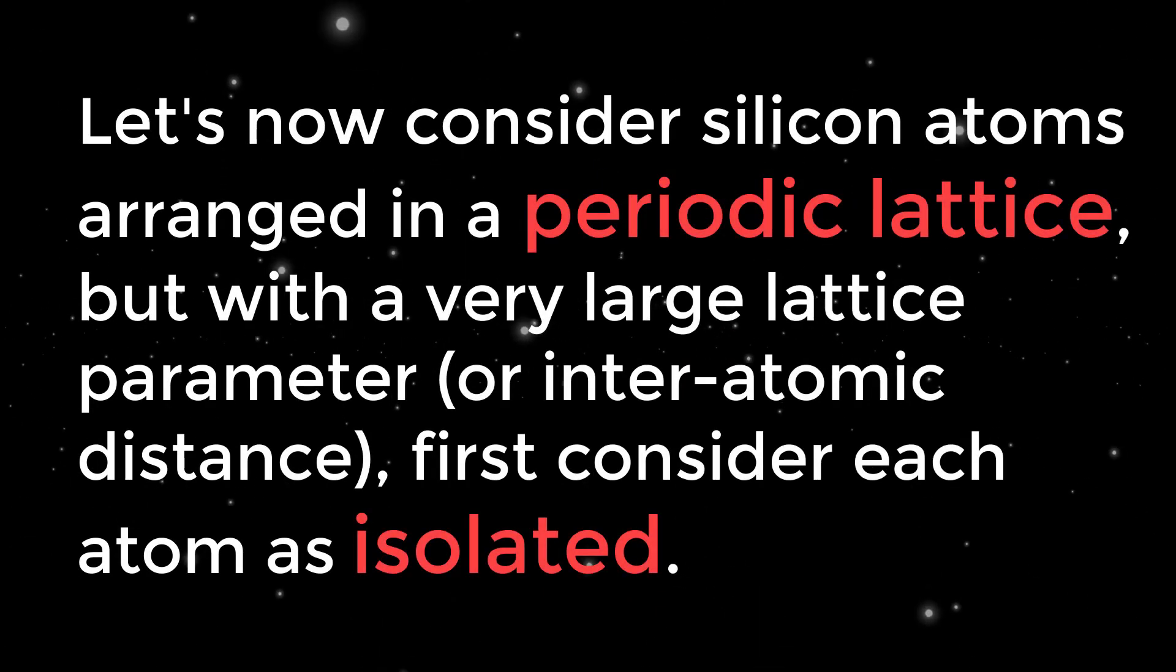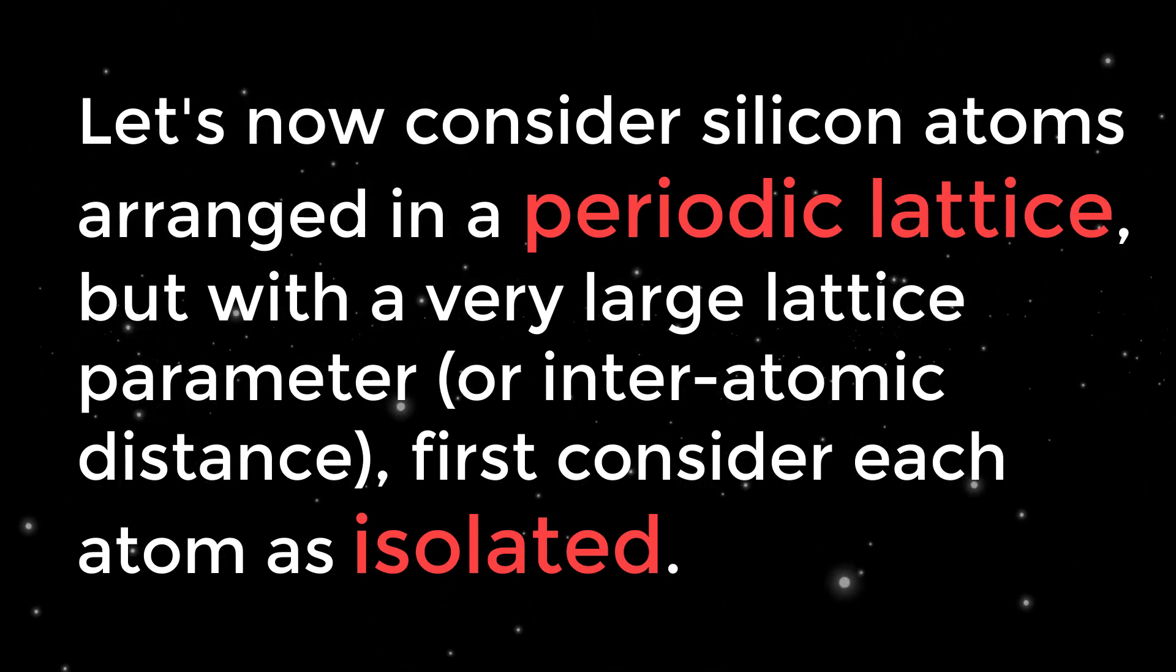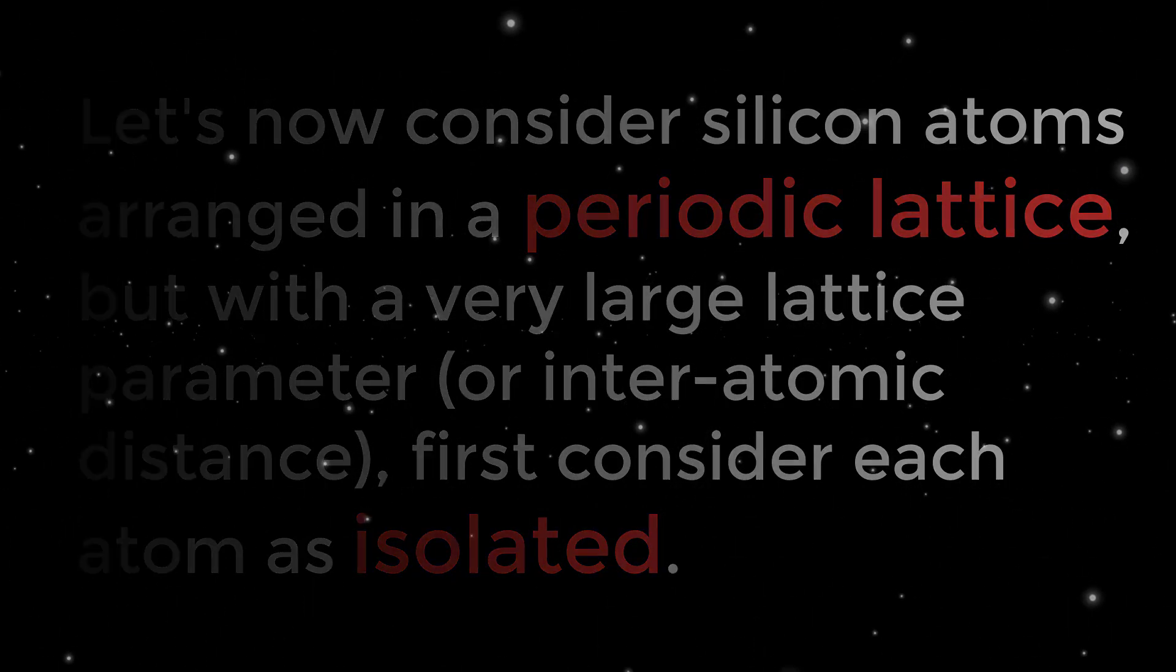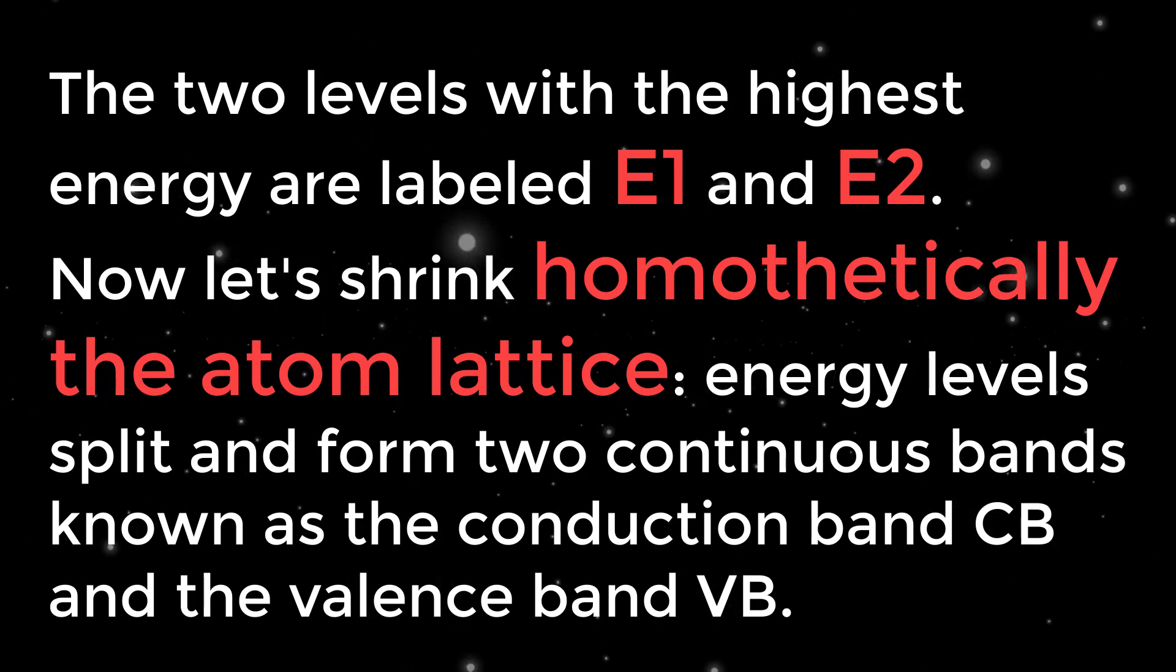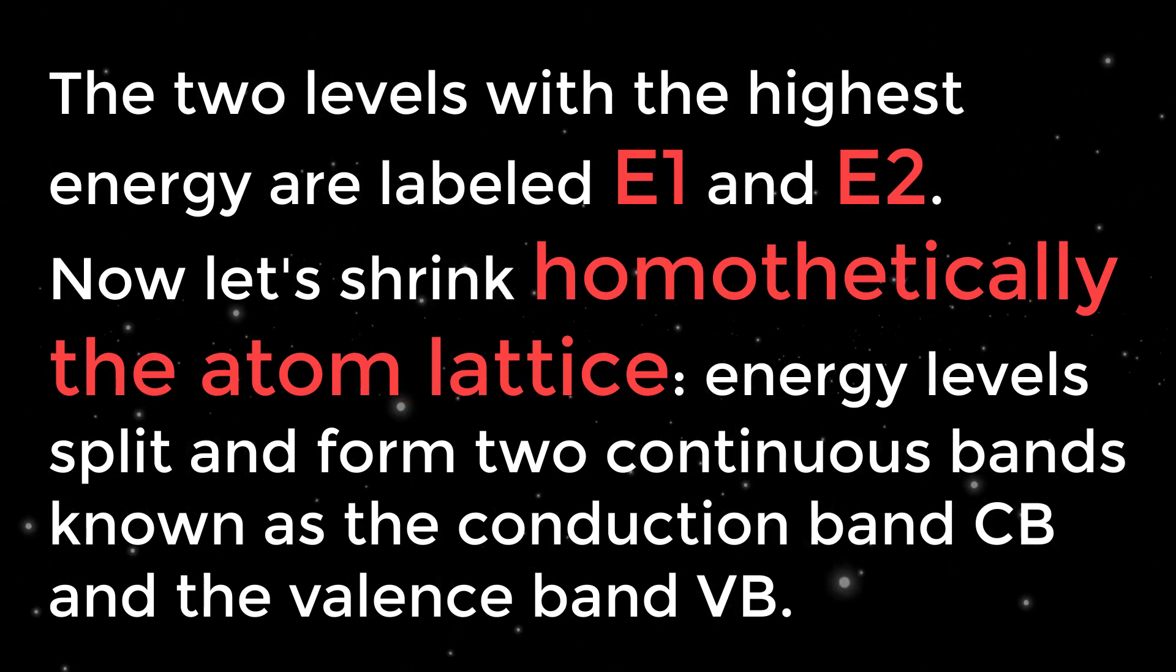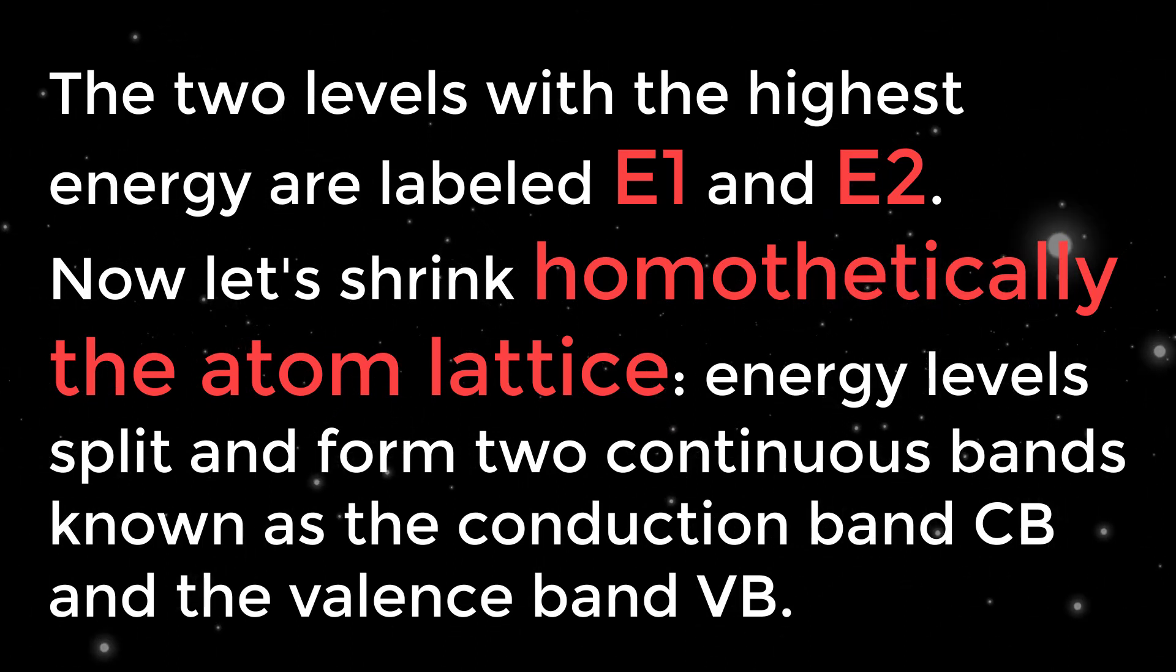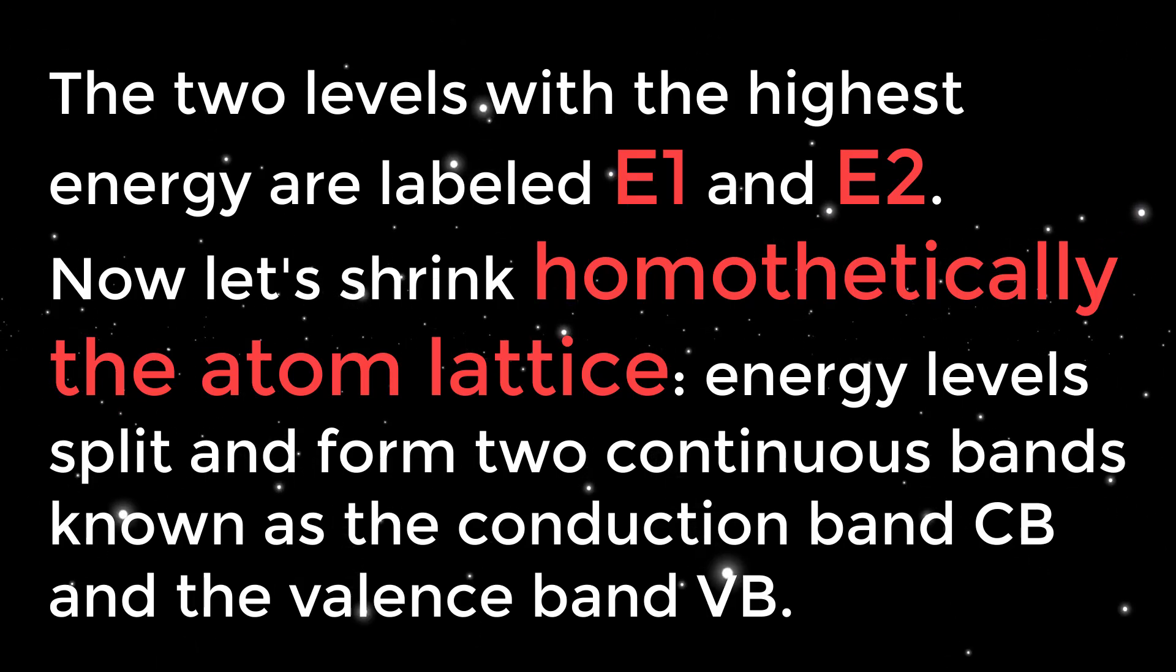Let's now consider silicon atoms arranged in a periodic lattice, but with a very large lattice parameter or inter-atomic distance. First consider each atom as isolated. The two levels with the highest energy are labeled E1 and E2. Now let's shrink homothetically the atom lattice. Energy levels split and form two continuous bands known as the conduction band CB and the valence band VB.